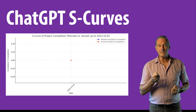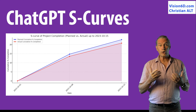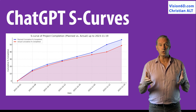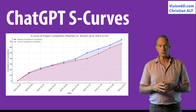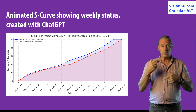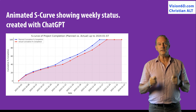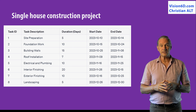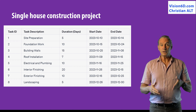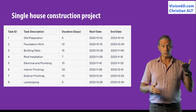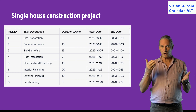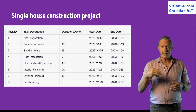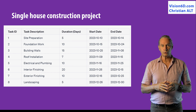S-curve is an essential tool for communicating about the progress of your project in order to make decisions. ChatGPT can generate those S-curves really easily. All it needs is data from your project. You can provide that data through an Excel file, through a CSV file, or from MS Project or any other project management tool.